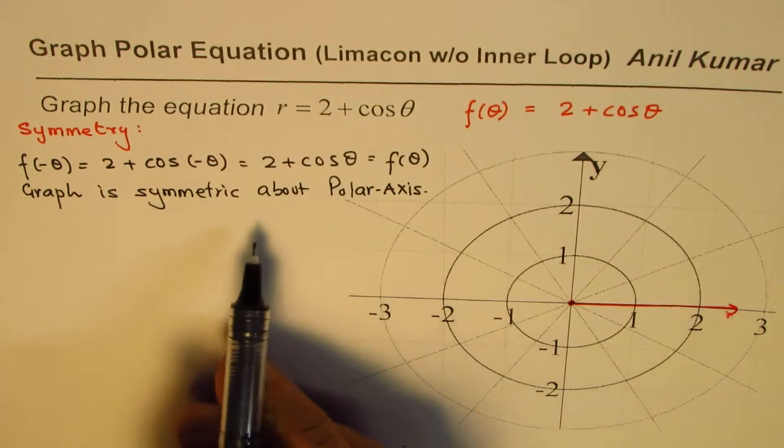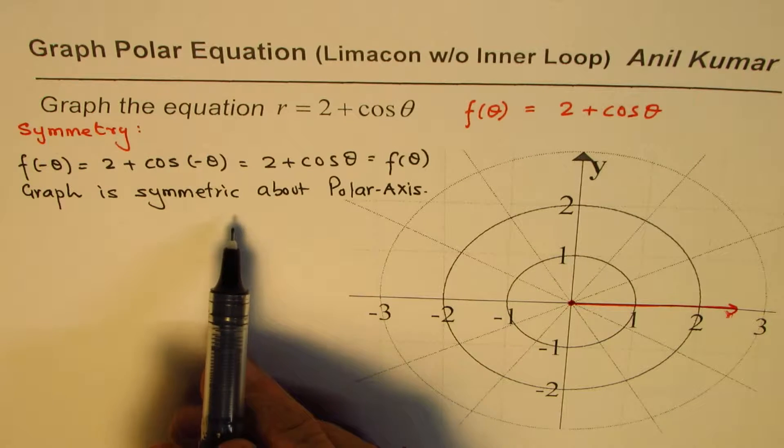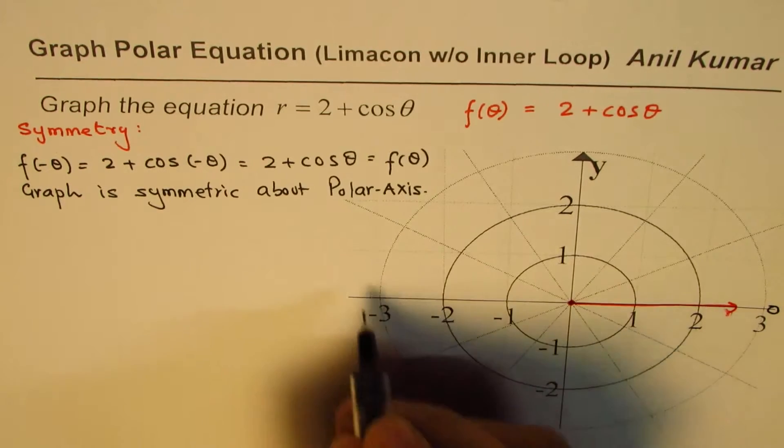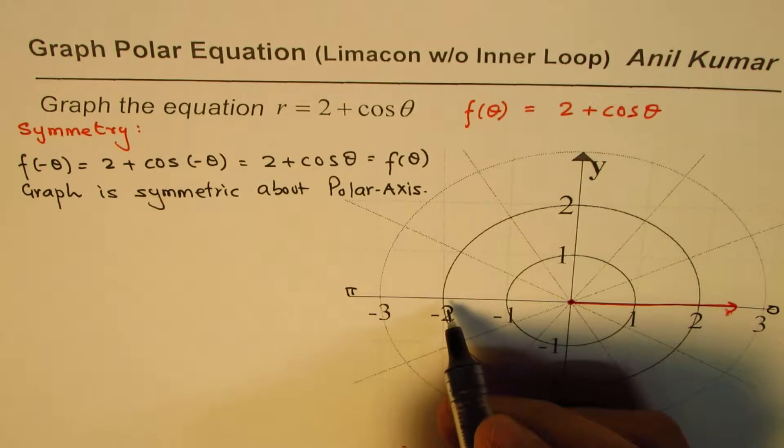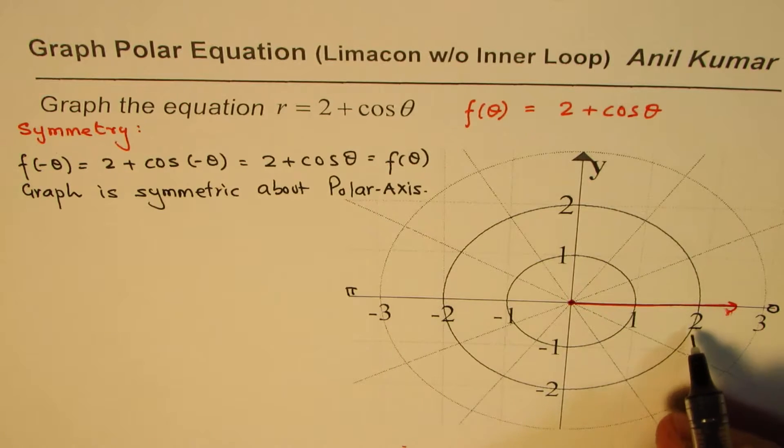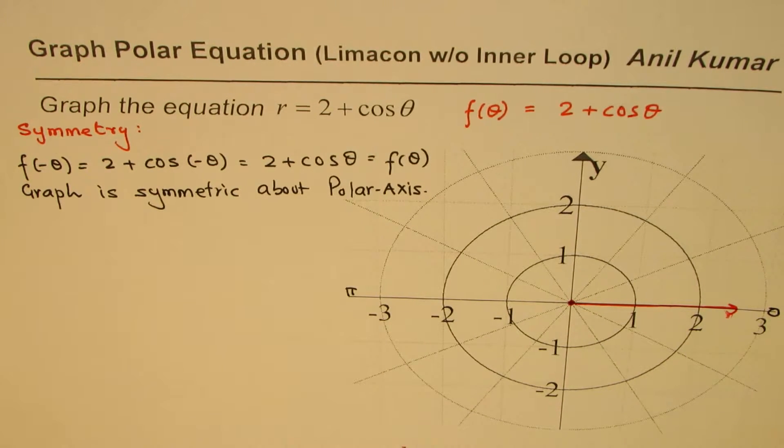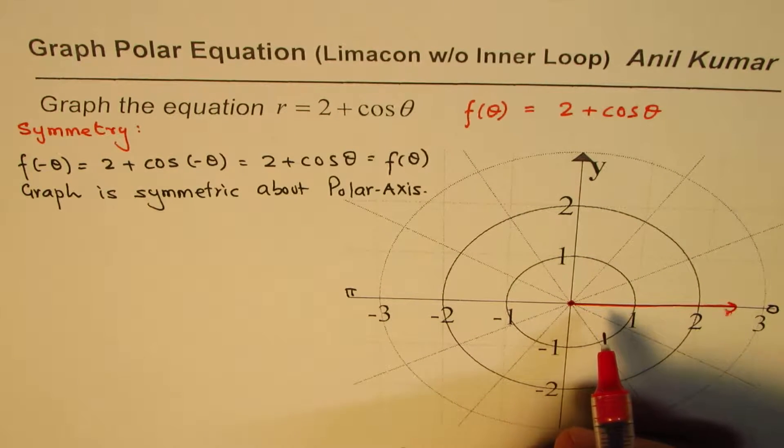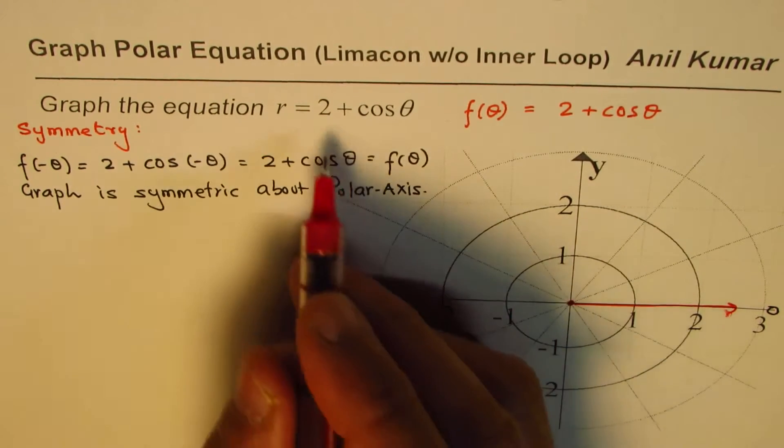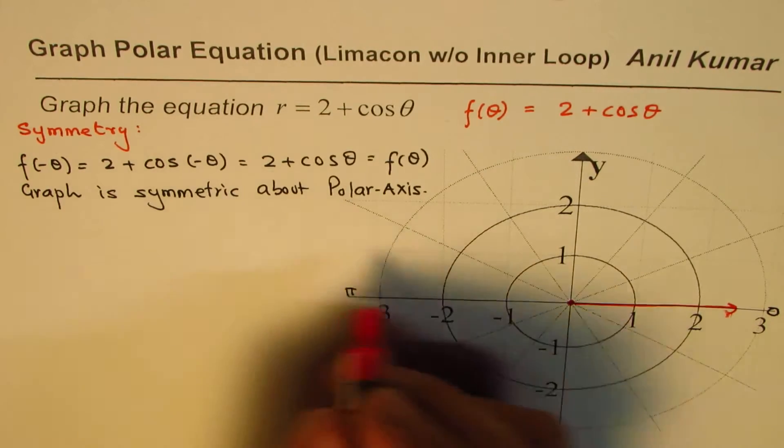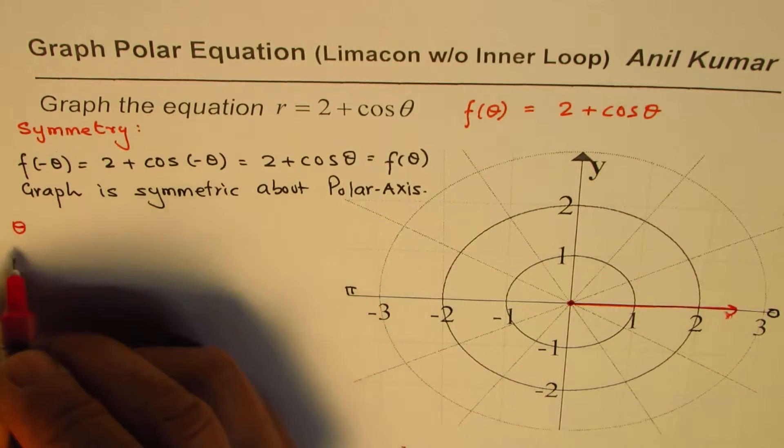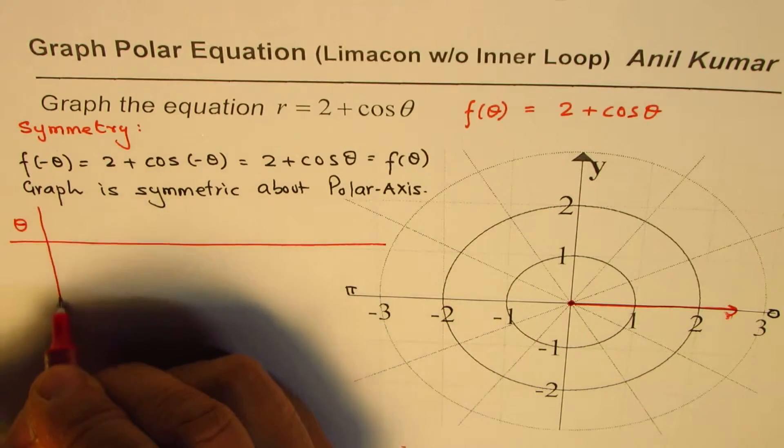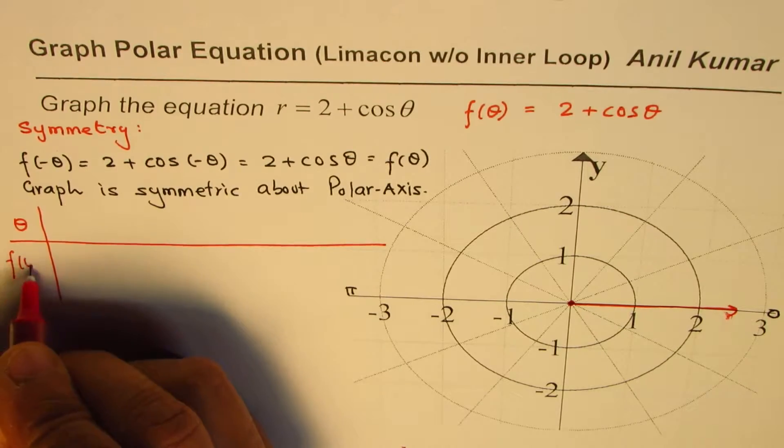Once we know that, we know that we could only take values of theta from 0 to π and then plot those values and reflect them to get the rest. So that helps us to restrict our values. So in this case, what we will do is, for the given function, we'll take values of theta from 0 to 2π. We'll just make a table of values here and calculate the values of theta and f of theta.